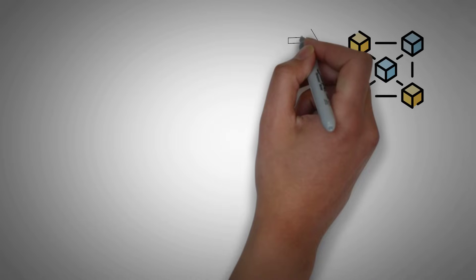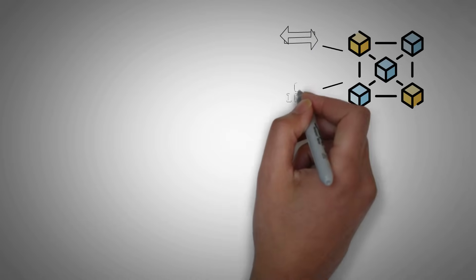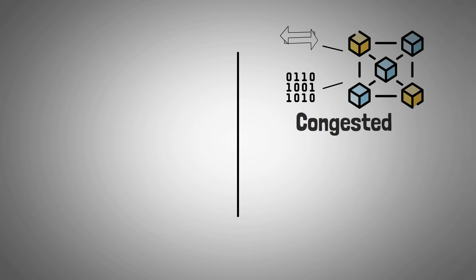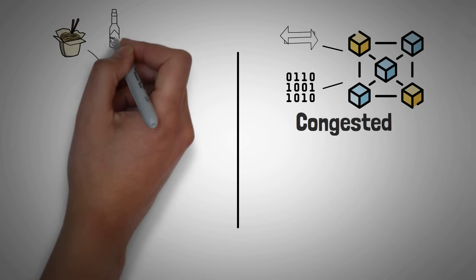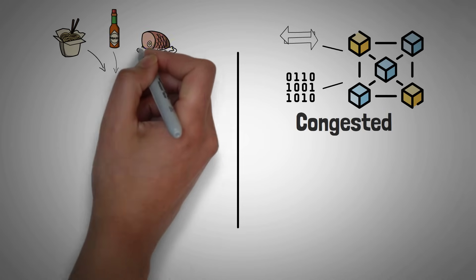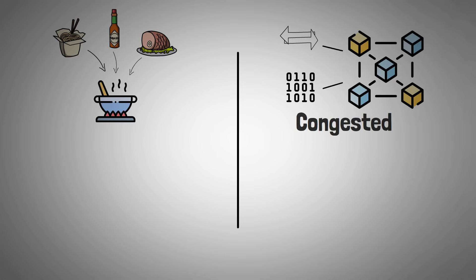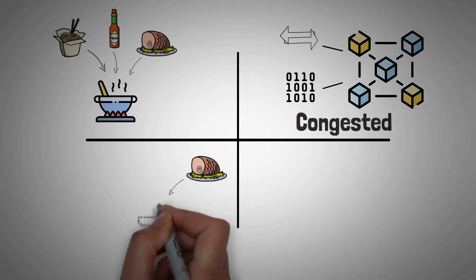So back to our crazy spaghetti analogy earlier, if you did all the transactions and data processing on the main chain, it would get super congested and backed up. Similarly, if we cooked the spaghetti, water it was boiling in, the meat, and the sauce all in one pan, it just wouldn't work well.